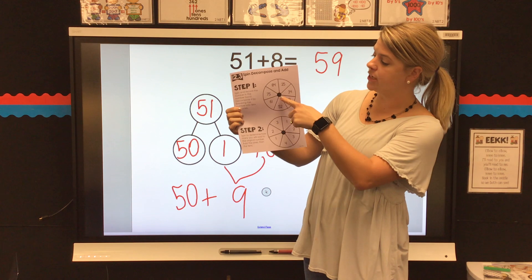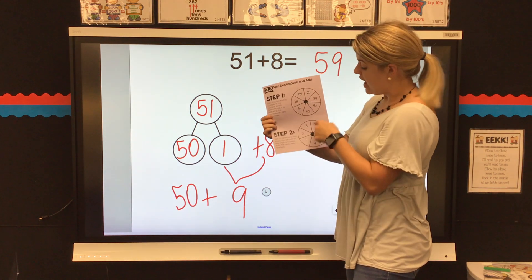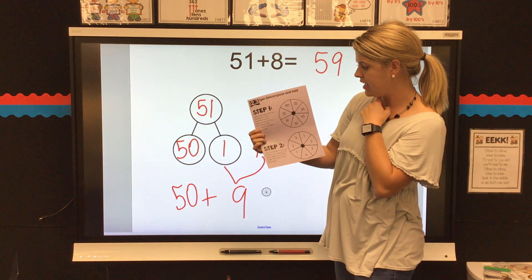The first thing you're going to do is you're going to spin to find out what your biggest number is going to be, and then you're going to spin again to find out what number you're going to add here.